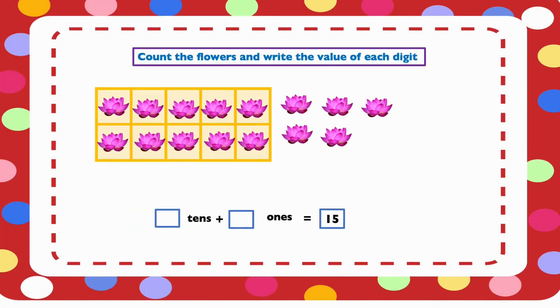Count the flowers and write the value of each digit. We have 15 flowers. And we want to find out the value of each digit in 15. Is it tens or ones? Let's count the flowers: 1, 2, 3, 4, 5, 6, 7, 8, 9, 10.